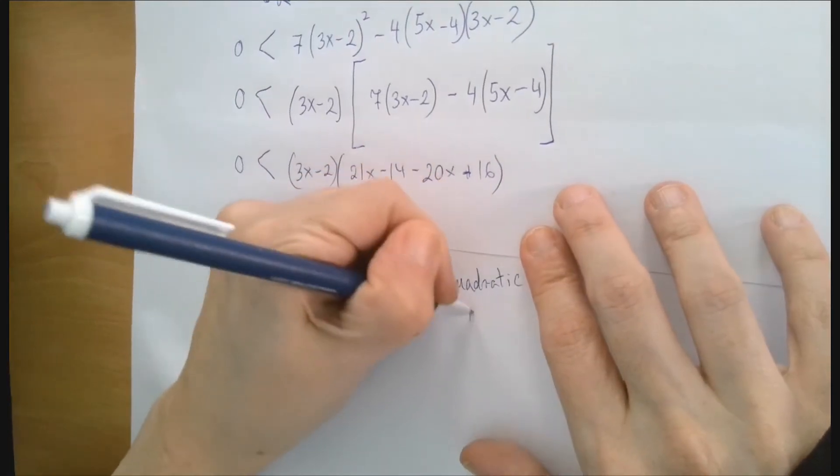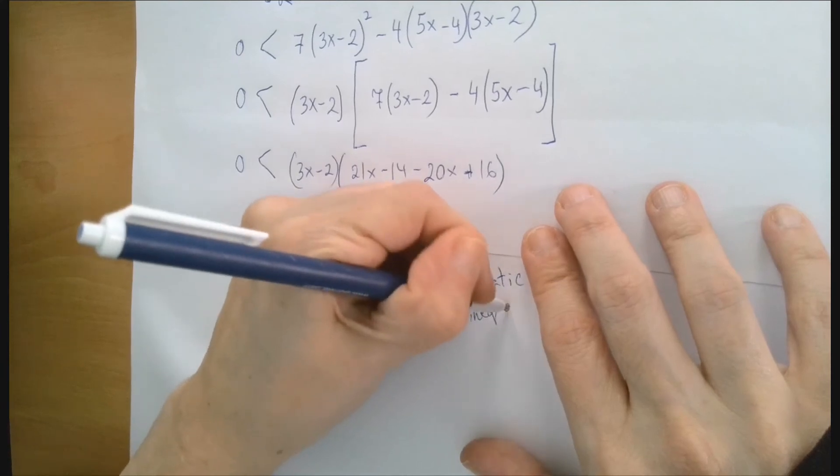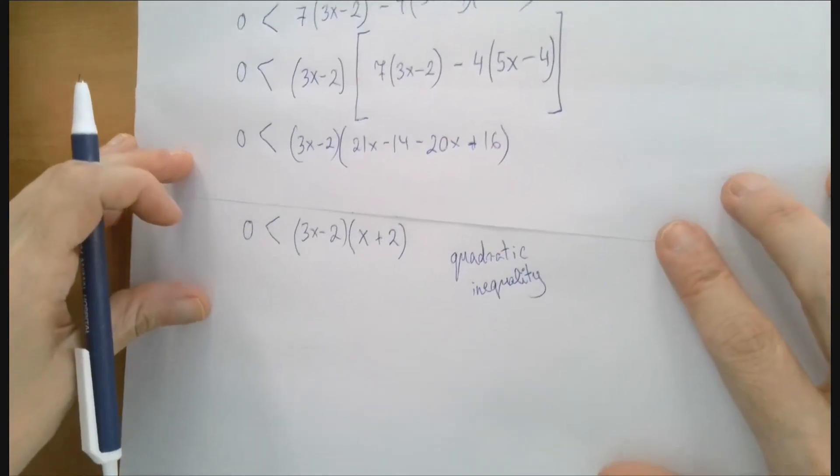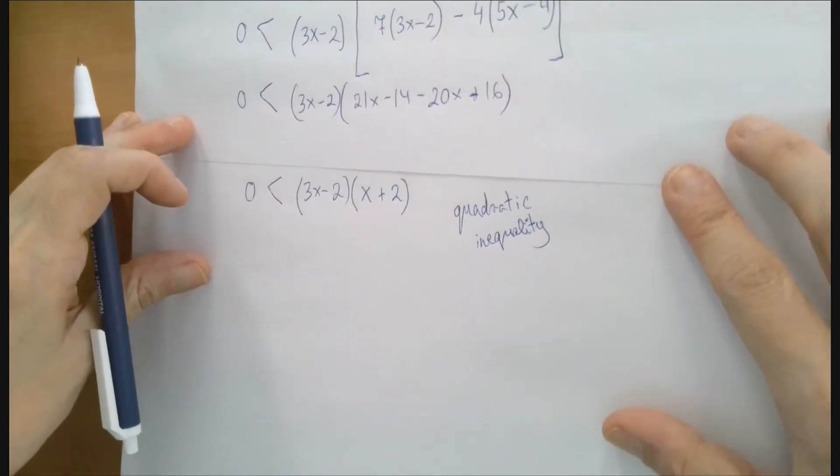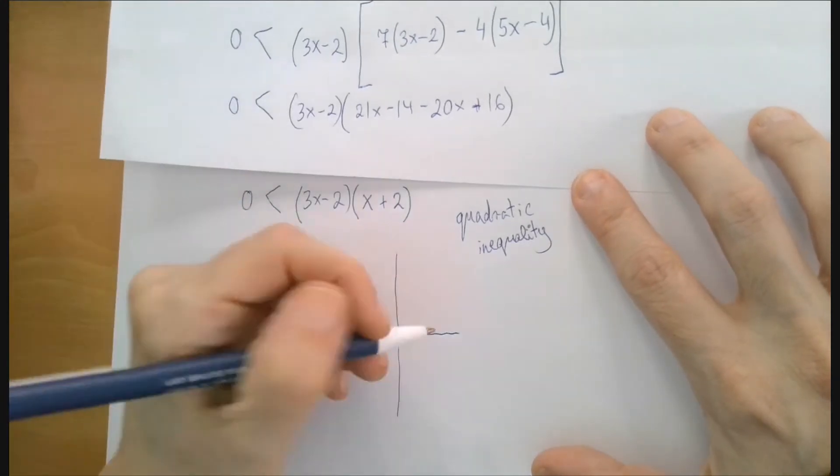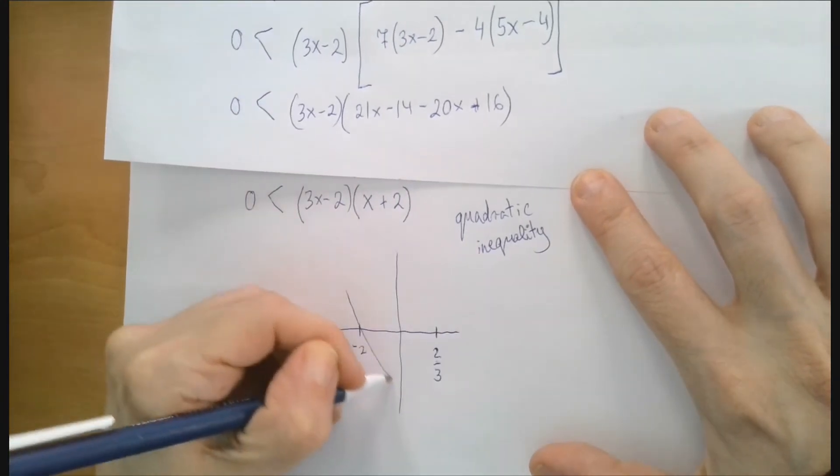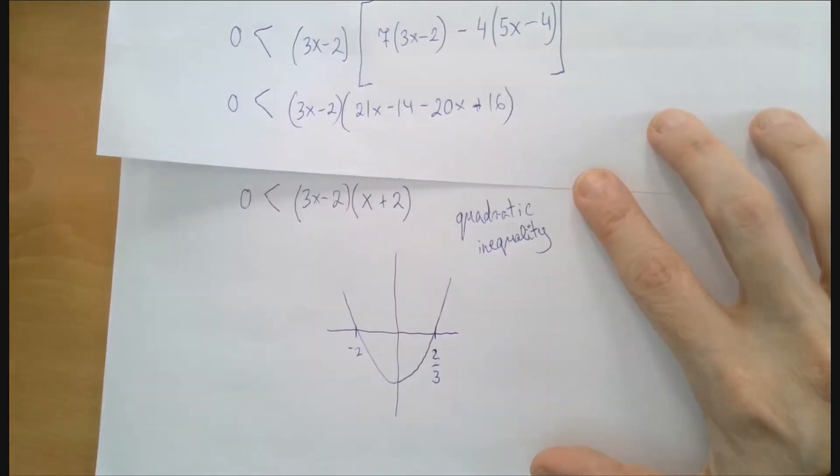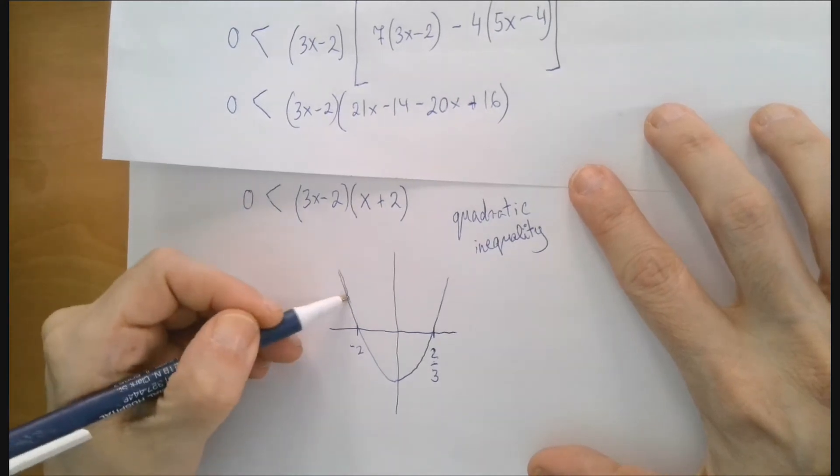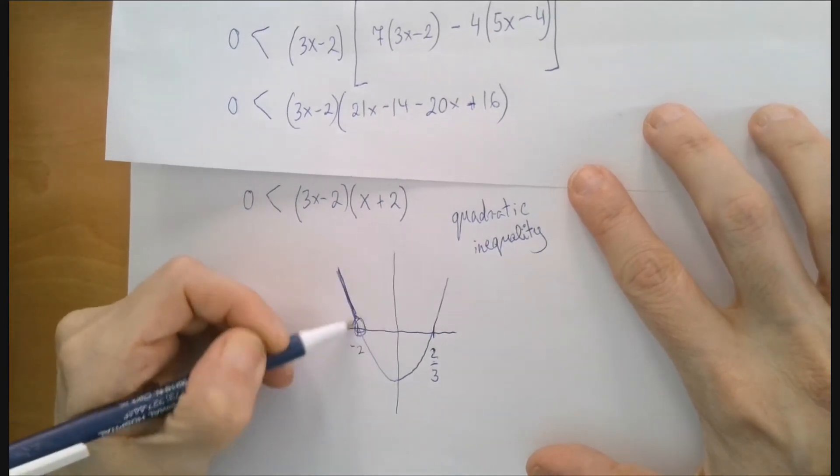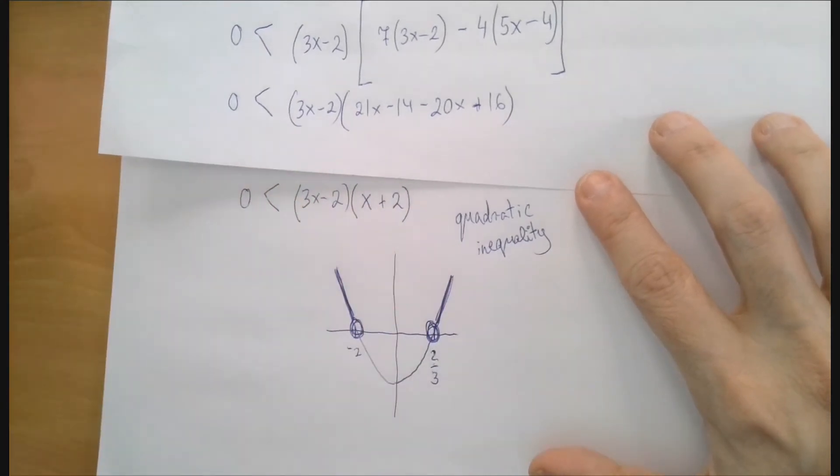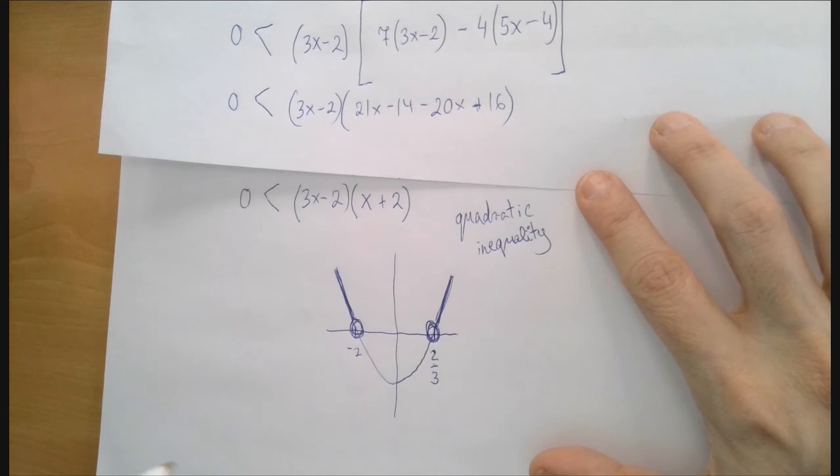Now we reduce the problem to a quadratic inequality in which we're looking for all values of x for which 3x minus 2 times x plus 2 is greater than 0. If we graph the parabola y equals 3x minus 2 times x plus 2, on the graph of this parabola we can replace our inequality to 0 is less than y, which is the same as y is greater than 0. So we're looking for the part of the parabola that's positive, that's above the x-axis, that is the chunk to the left of negative 2 and to the right of 2 thirds.